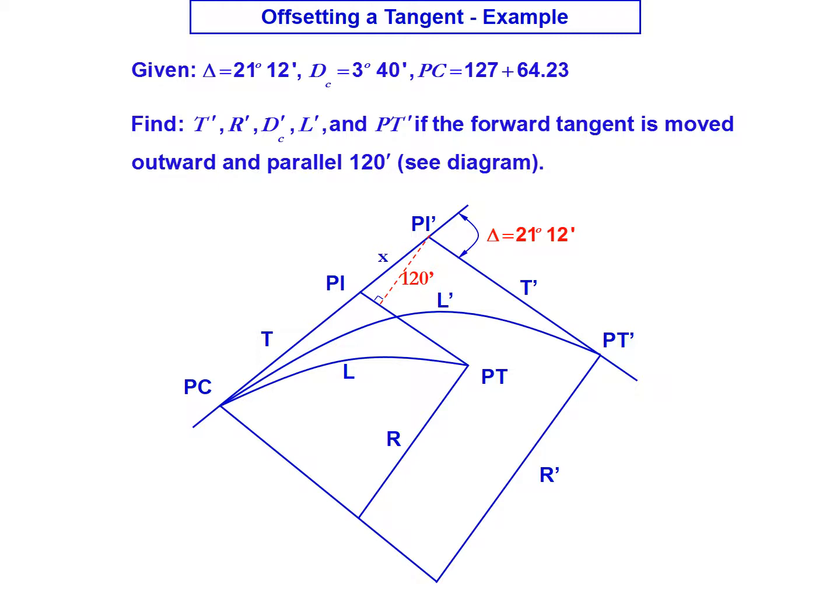We're told to find the new tangent, radius, degree of curve, curve length, and PT after the forward tangent is moved outward and parallel 120 feet as shown in the diagram. This method for offsetting a tangent only applies when we're moving a tangent parallel to the existing tangent.